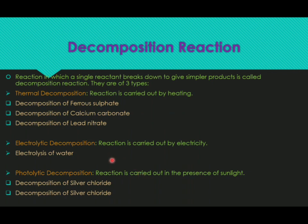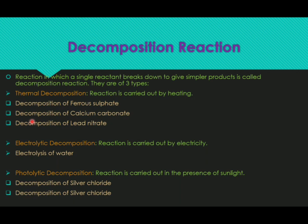The reaction in which a single reactant breaks down to give simpler products is called a decomposition reaction. There are three types: thermal, electrolytic, and photolytic. From the names, you can understand that thermal decomposition uses heat energy, electrolytic decomposition uses electricity, and photolytic decomposition uses sunlight. We will take each one and go through the equations.